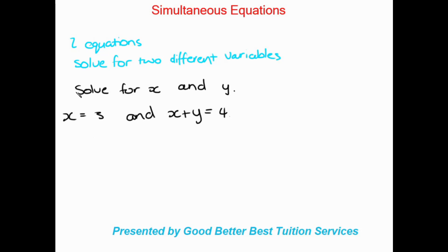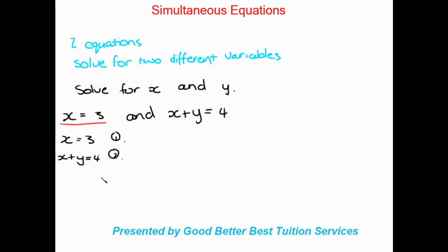We can see in one of our equations they've already given us what X is equal to, so we know X is equal to 3. When it comes to working out equations simultaneously, we need to substitute one equation into the other. We'll call X equals 3 equation number 1, and X plus Y equals 4 equation number 2. We've already found X, so we need to find Y.